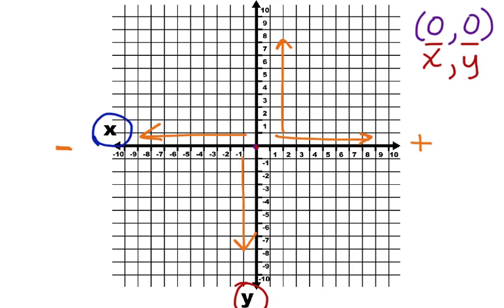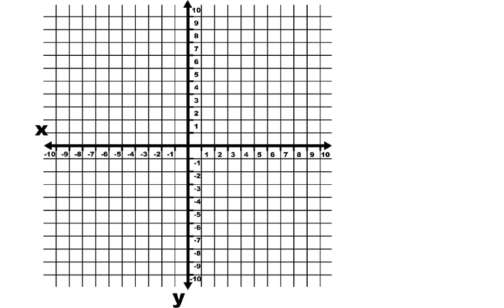Let's take a look at how to graph some points. Let's say that we want to graph the point 3, negative 7. First, we start at the origin. 3 is positive. That's our x value. We're going to go 3 to the right: 1, 2, 3.